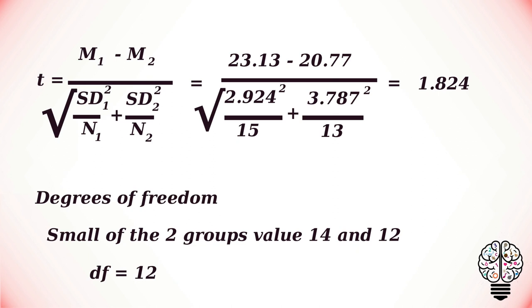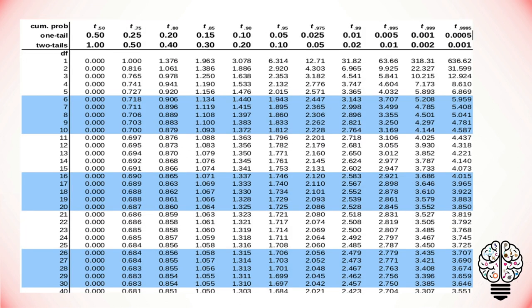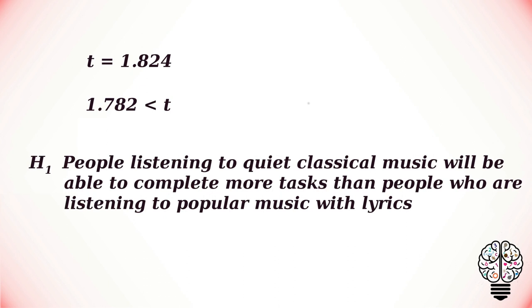To calculate the degrees of freedom for these two groups, we take the sample size of the smaller group and apply the formula n−1, giving us 12. Using the t-distribution table with degrees of freedom 12 and alpha 0.05 (one-tailed), the critical value is 1.782. Since our t value of 1.824 is greater than 1.782, the result supports the alternative hypothesis: people listening to quiet classical music are able to complete more tasks than people listening to popular music with lyrics.